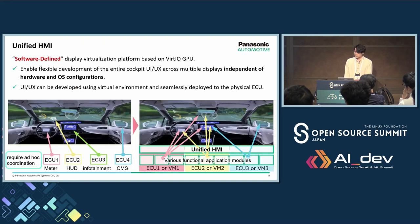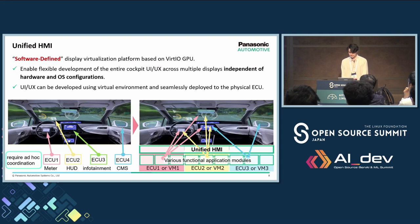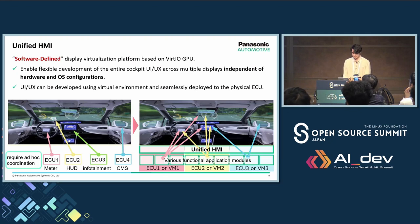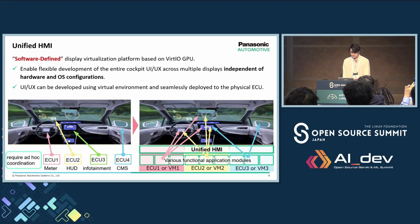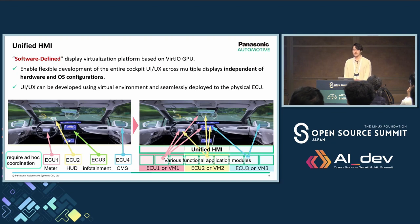We at Panasonic Automotive Systems developed a software-defined display virtualization platform based on Virtio GPU called Unified HMI. Unified HMI allows for flexible development of the entire cockpit and cabin UI and UX across multiple displays, independent of hardware and OS configurations. The entire cockpit UI and UX is developed using virtual environments such as the cloud, and can be seamlessly deployed to the physical ECUs.